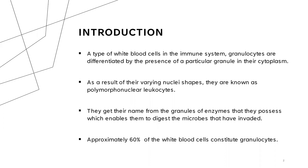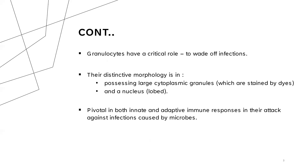They get their names based on the enzyme that their granules produce, and also the kind of staining that their granules can be stained with. Approximately 60% of the white blood cells we have consist of granulocytes, so they make up the bigger chunk of the leukocytes. Therefore, they are very important when we talk about infection.